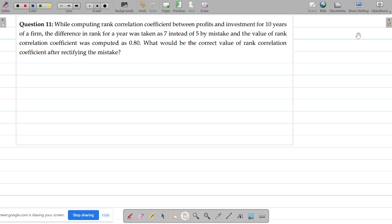This question is about correcting wrong values. While computing rank correlation coefficient between profits and investment for 10 years, so n equals 10, the difference in rank for a year was taken as 7 instead of 5. So the wrong value was 7, the right value is 5. But n is 7.